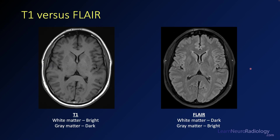Comparing T1 versus FLAIR, the contrast is flipped. On T1, white matter is a little bit brighter, with darker gray matter over the top, due to the fatty and myelin contents. On FLAIR, that relationship is reversed — the gray matter is a little bit brighter and the white matter is darker. This is a way to tell T1 from FLAIR even without image labeling.